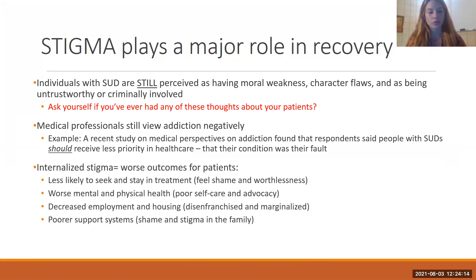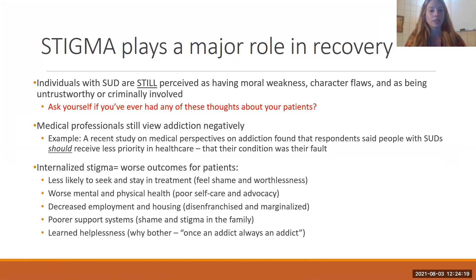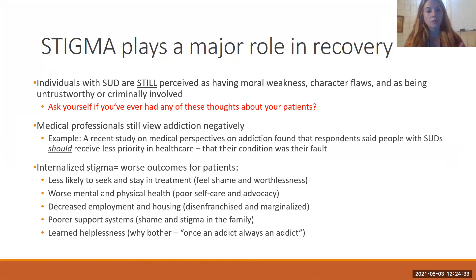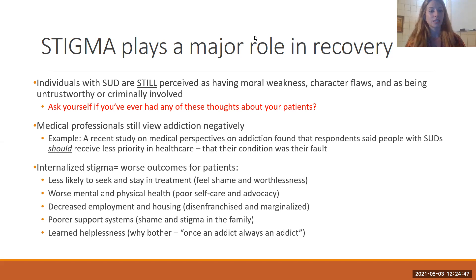Substance use disorder is still our most stigmatized mental health condition. Even in places like ASAP or other community clinics, there tends to be an artificial separation between mental health and substance use — but substance use disorders, opiate use disorder, is in the DSM. It is a mental health condition. It is highly comorbid with other mental health conditions. We really have to work against that stigma because it is still very, very present.